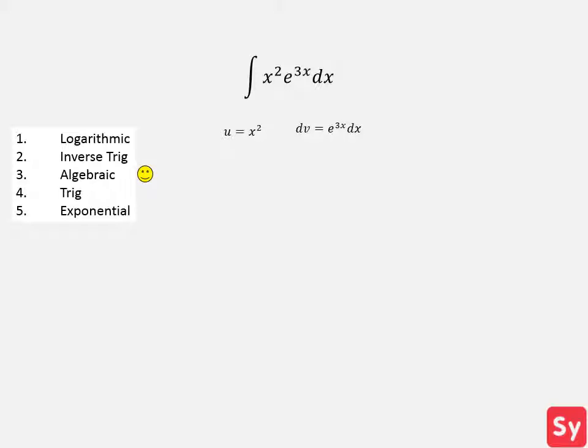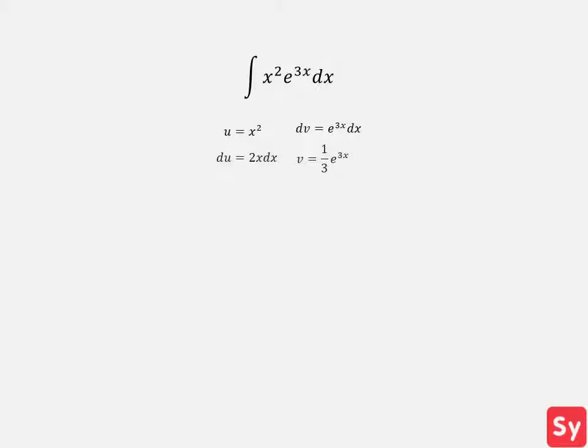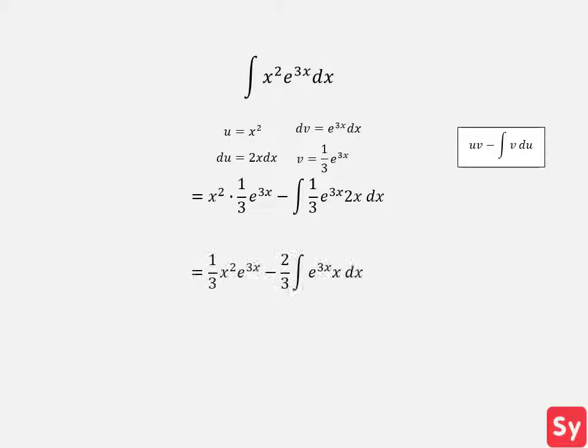We then calculate du and v, and put these values into the integration by parts formula. Next, we'll rewrite this by pulling out the constants in the integrand.